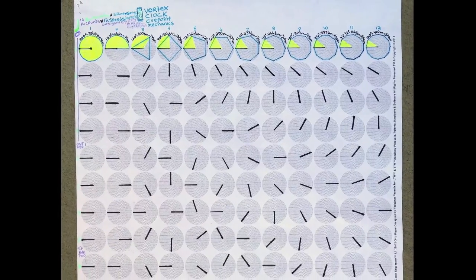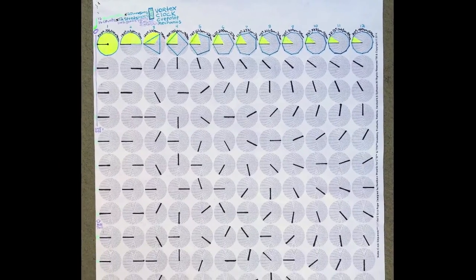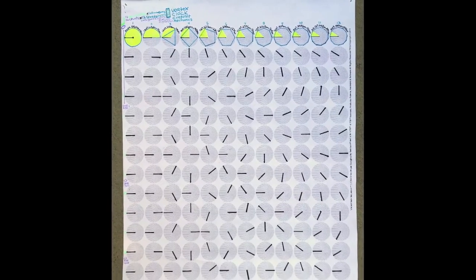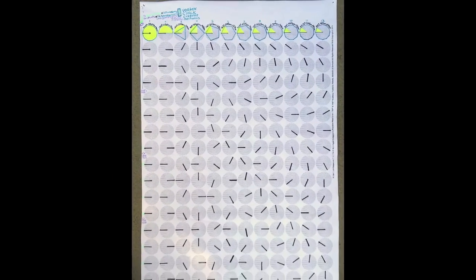The following diagram entitled Vortex Clock Cue Point Mechanics is a table of 12 skipless record cue point positions over a period of 4 bars.